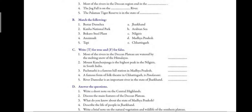Now moving on, we have match the following. First, Bastar Dashaira is a festival celebrated in Chhattisgarh. Second, Kana National Park is in Madhya Pradesh. Third, Bokaro Steel Plant is in Jharkhand. Fourth, Anay Mudi is the highest peak of Nilgiri, so Anay Mudi matches with Nilgiri. Fifth, Tapi matches with the Arabian Sea because river Tapi flows into the Arabian Sea.